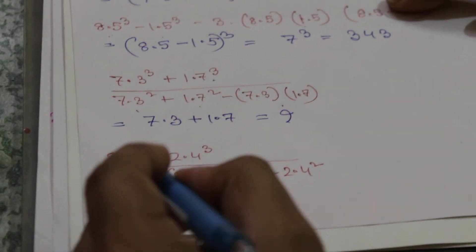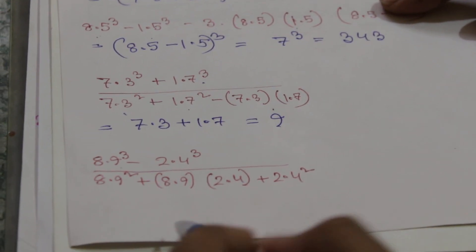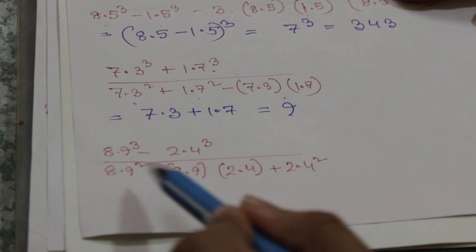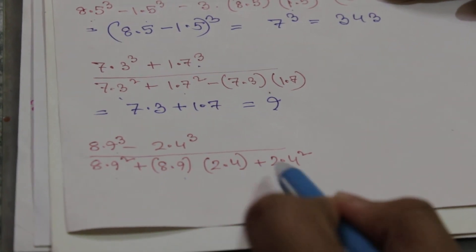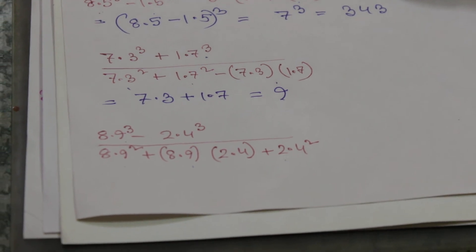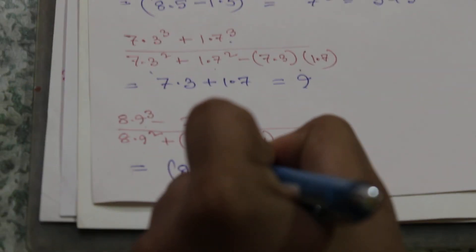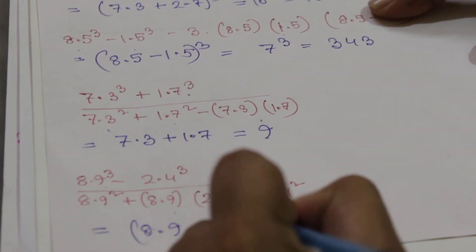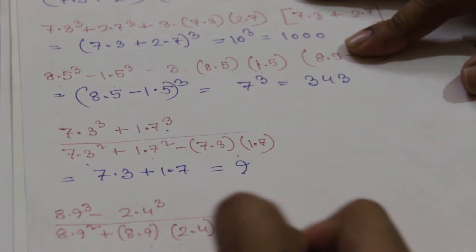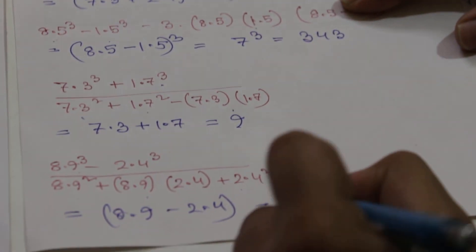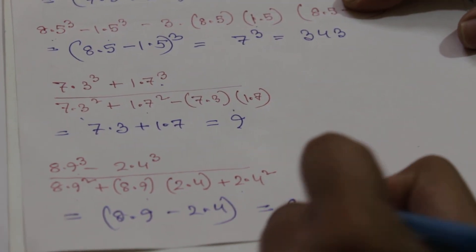The next example is a cube minus b cube divided by (a square plus ab plus b square). We will use this formula, so the result will be (a - b). The result is 6.5.